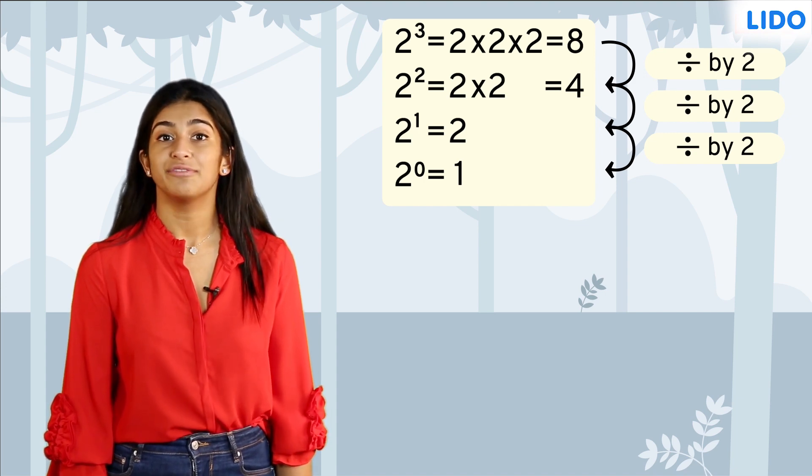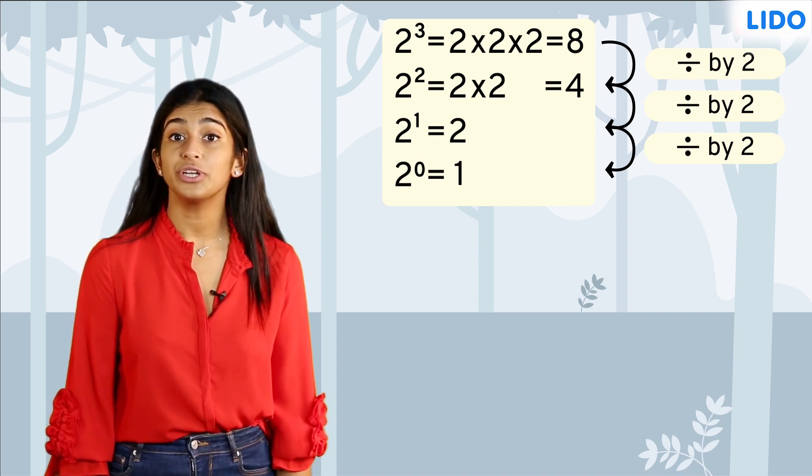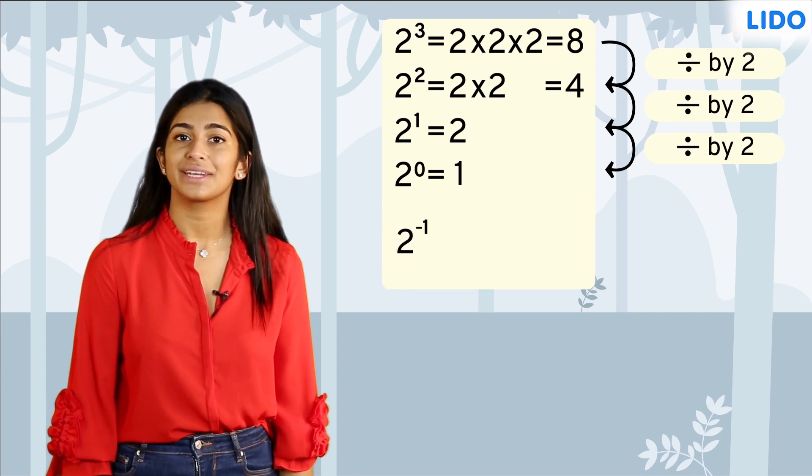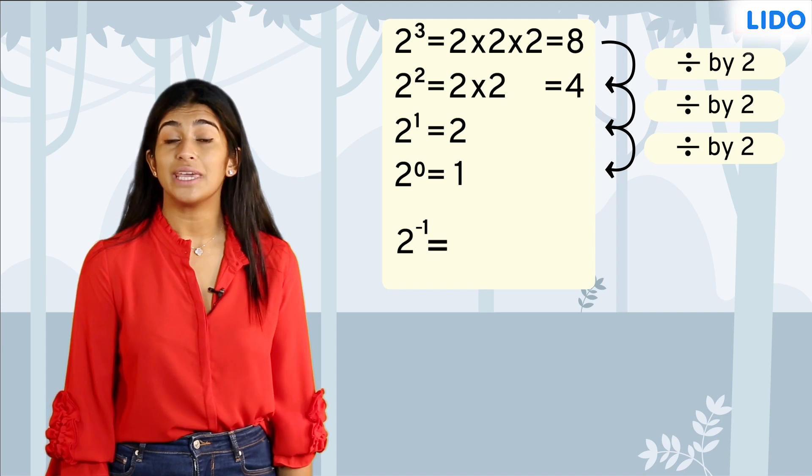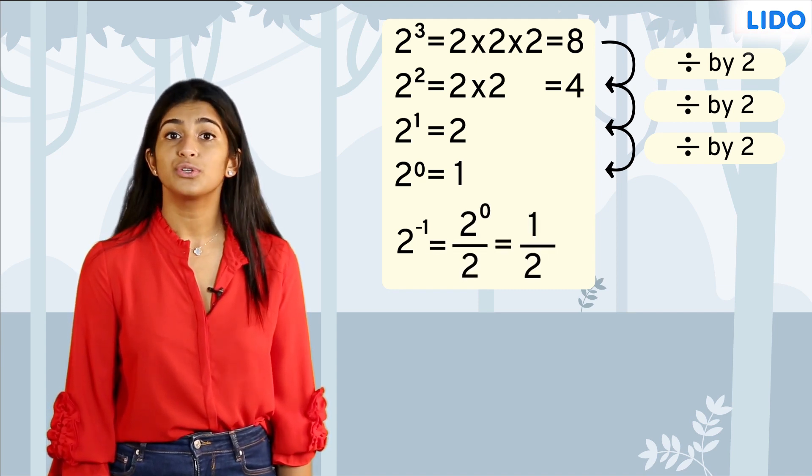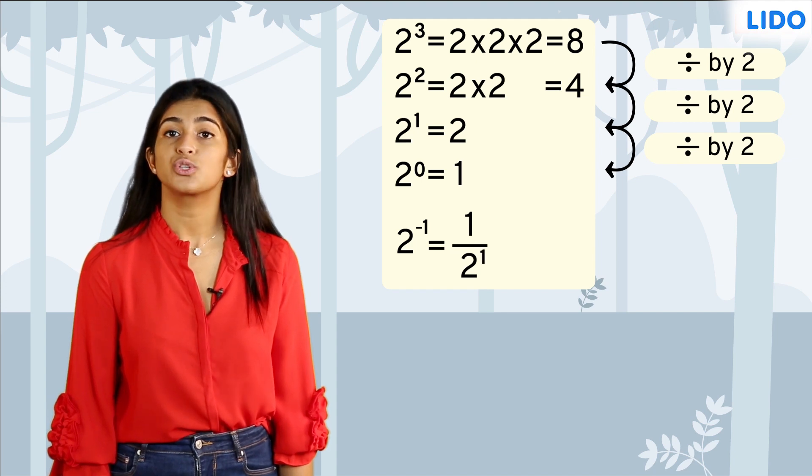Now let's continue this pattern further by reducing the exponent of 2 by 1 again. This will give us 2 raised to negative 1. According to the pattern, this should be equal to 2 raised to 0 divided by 2, or 1 over 2, or 1 over 2 raised to 1.